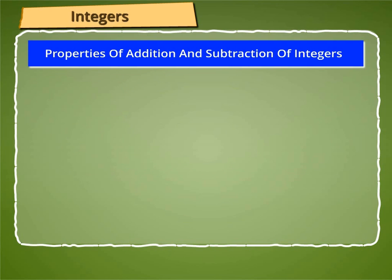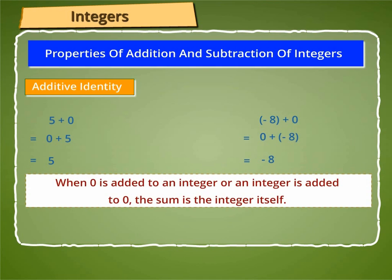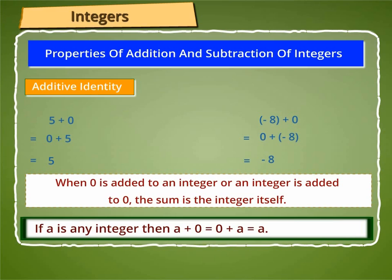Let us now talk about an identity called additive identity. As we know, 5 plus 0 is equal to 0 plus 5, which equals 5. Similarly, minus 8 plus 0 is equal to 0 plus minus 8, which equals minus 8. From the above, we observe that when 0 is added to an integer or an integer is added to 0, the sum is the integer itself. Thus, 0 is the additive identity. Hence, if A is any integer, then A plus 0 is equal to 0 plus A, which equals A.